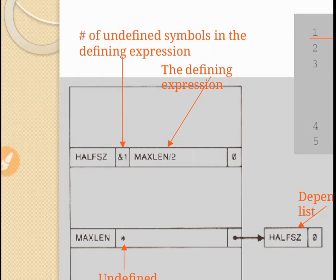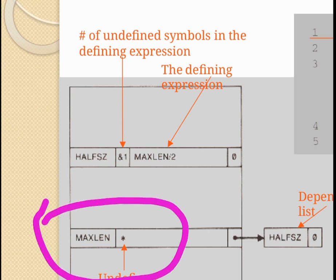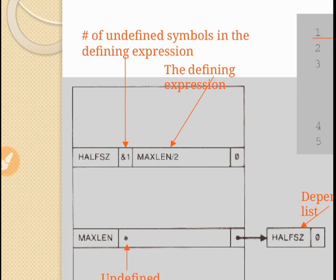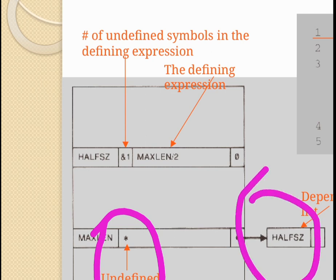With the entry for half_size, we also add an entry for max_length marked with an asterisk to show that it is an undefined symbol. Along with this, we have a depending list — a linked list which contains the address of half_size — to show that half_size is dependent on max_length, so that as soon as max_length is resolved, this address can be used to resolve half_size.